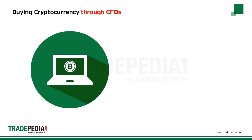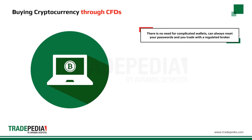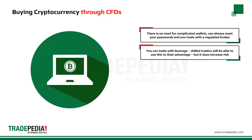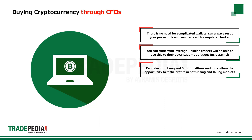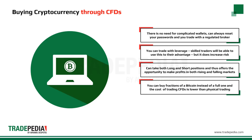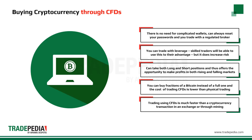Trading Bitcoin CFDs with a regulated broker solves the problems of exchange trading. There is no need for complicated wallets, you can always reset your passwords, and you trade with a regulated broker. You can trade with leverage — skilled traders can use this to their advantage, though it does increase risk. You can take both long and short positions, offering the opportunity to profit in both rising and falling markets. You can buy fractions of a Bitcoin instead of a full one, and the cost of trading CFDs is lower than physical trading and much faster than exchange transactions or mining.